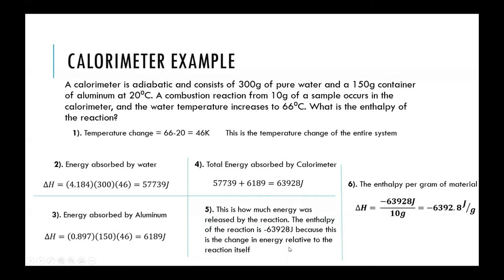You can also get the enthalpy per gram. The example lists a mass of 10 grams, meaning for every one gram of substance, there was 6,392.8 joules of energy released from the reaction and absorbed by the water and the calorimeter.